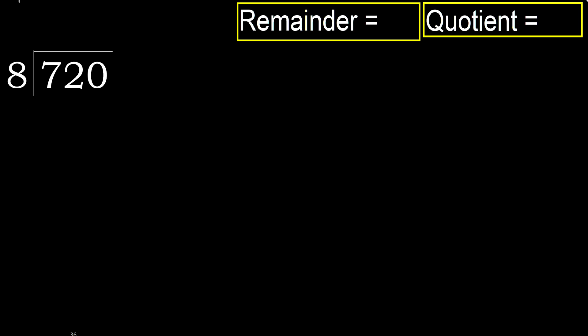720 divided by 8. 7 is less, therefore next: 72 is not less. Therefore with 72, 8 multiplied by which number is nearest to 72 but not greater? 8 multiplied by 9 is 72, which is not greater.